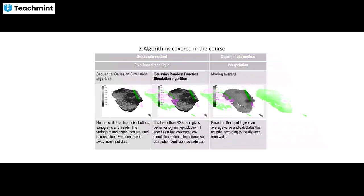Briefly, in Sequential Gaussian Simulation (SGS), you are honoring all the well data, input distributions, variograms, and other trends. The variogram distributions are used to create local variations, and the results are generated away from your input data.